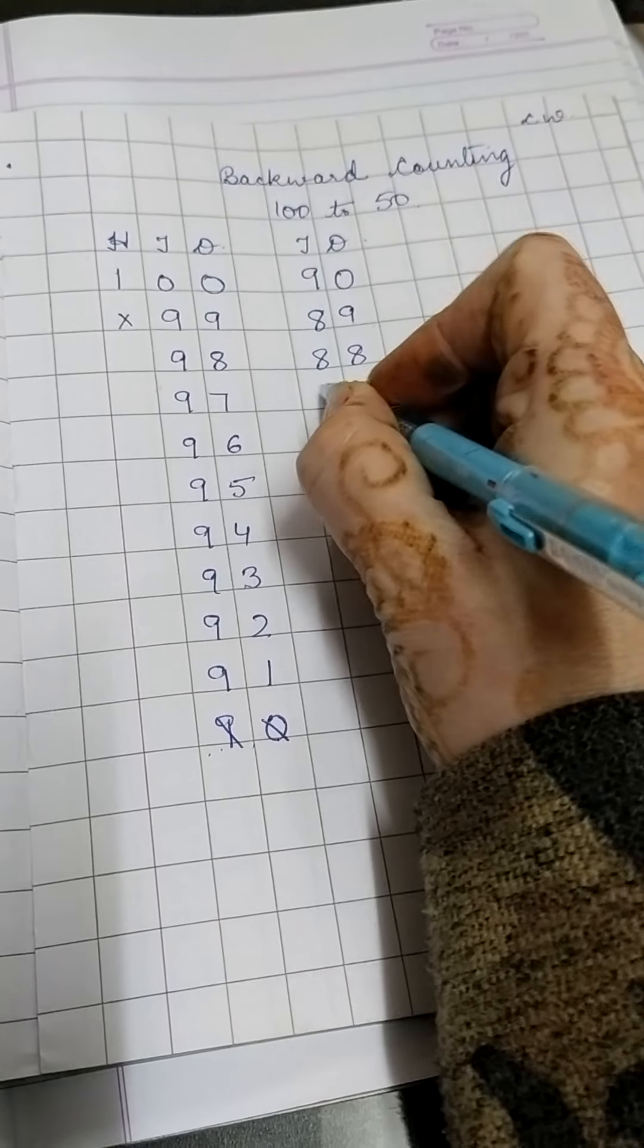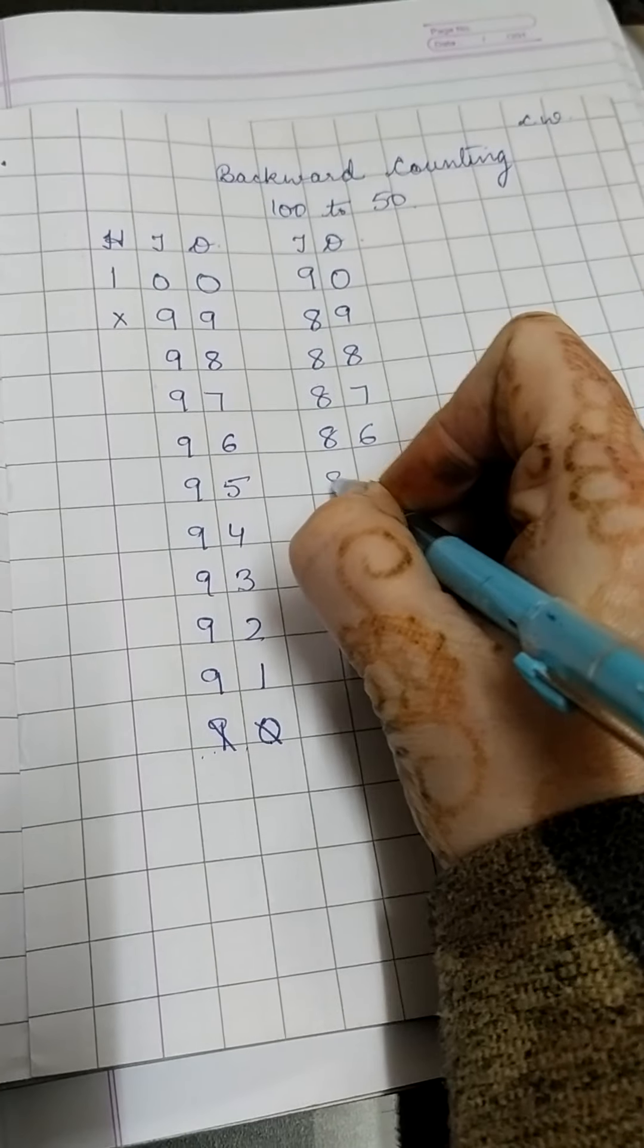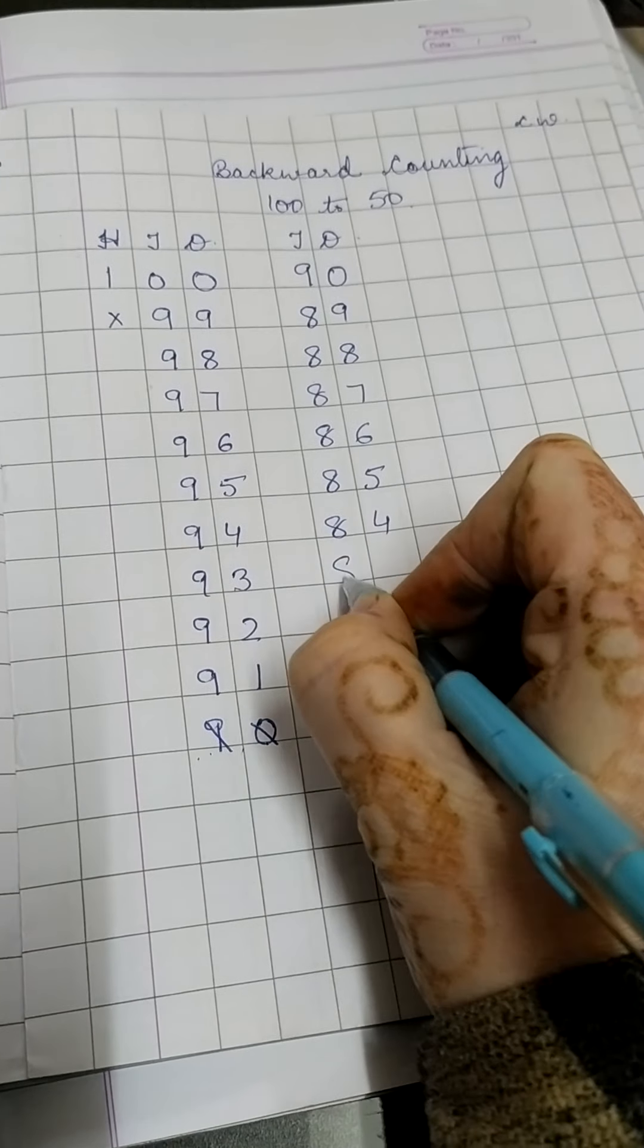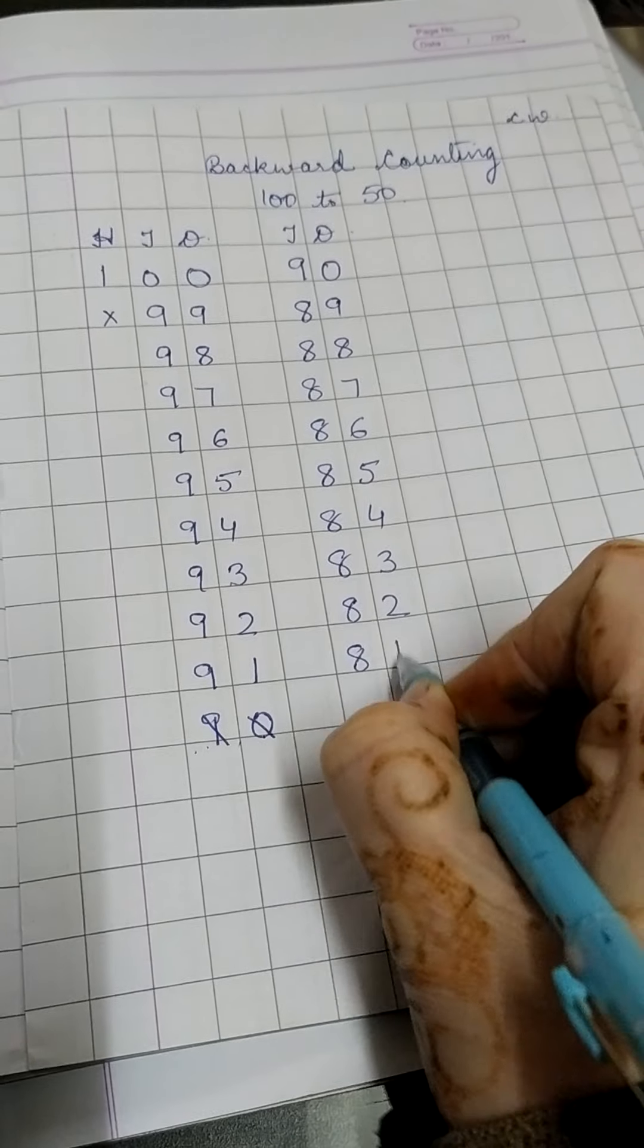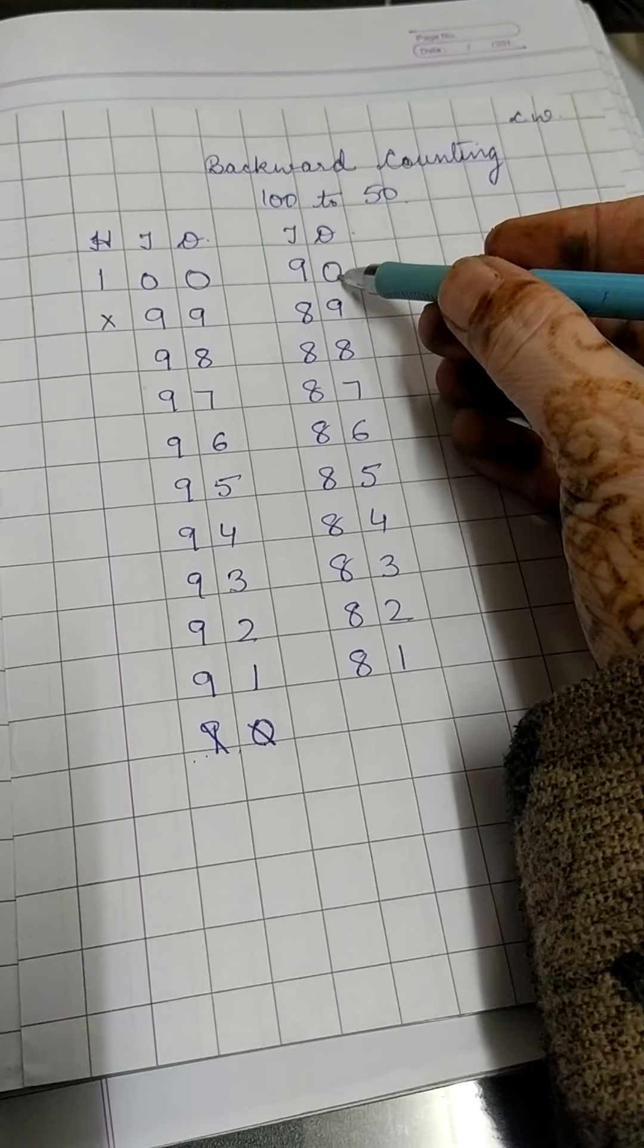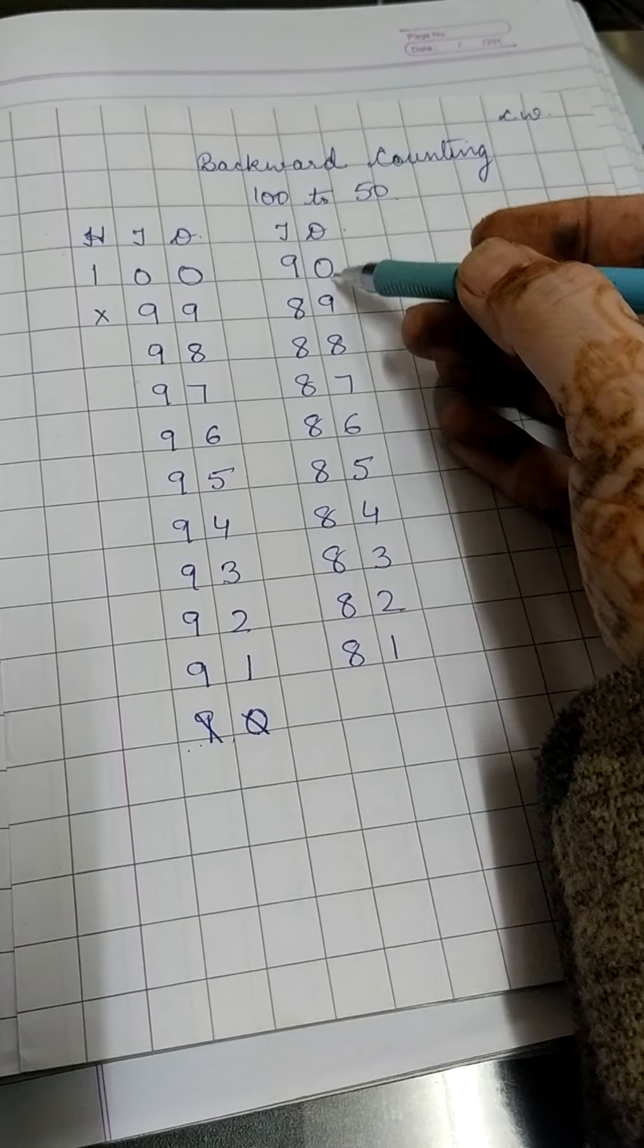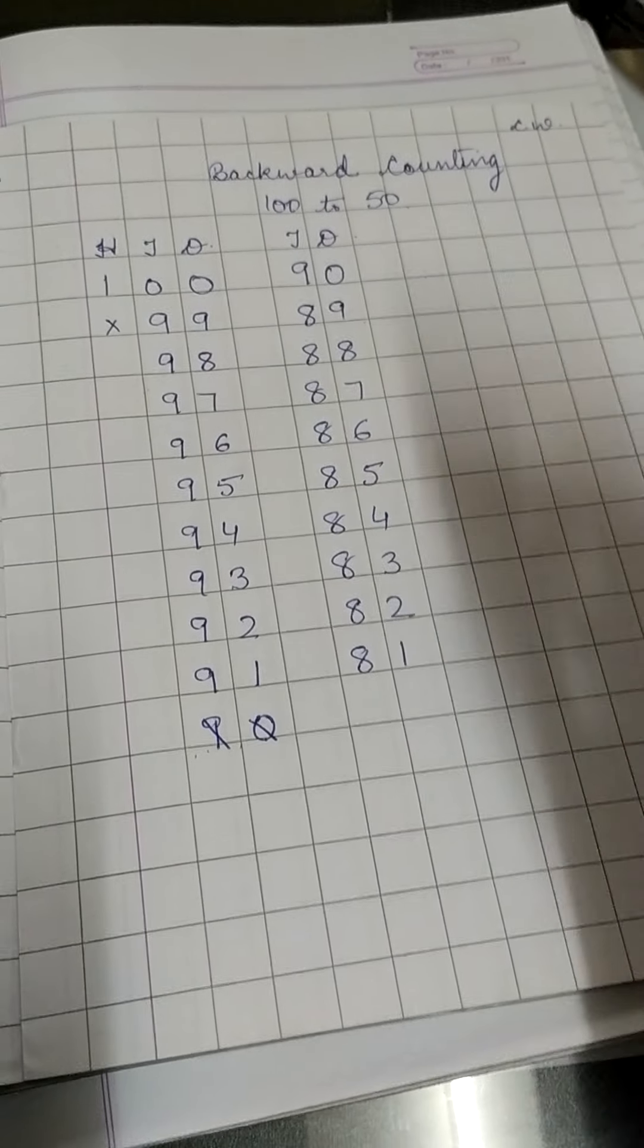88, 87, 86, 85, 84, 83, 82, 81. See the tens place won't change. It will change only when there is 0 in the ones place. Otherwise it will remain the same. Only the ones place will go on decreasing.